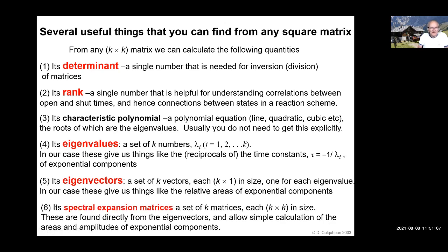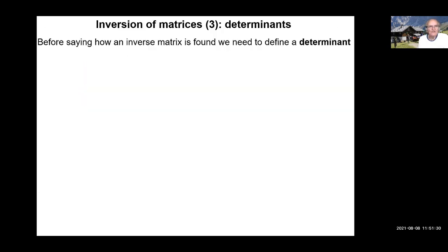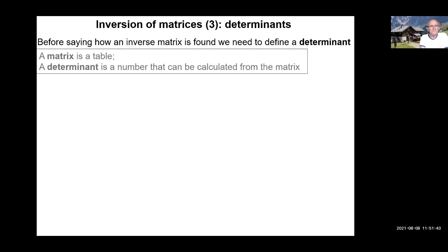And last but not least, you can find magical things called the spectral expansion matrices. This is a set of K matrices, each the same size as the original one. They can be found directly from the eigenvalues and they allow simple calculation of almost anything. They're wonderful. So let's just look — you don't have to do this ever in real life — but just look at the question of inversion of a matrix and its relationship to determinants.